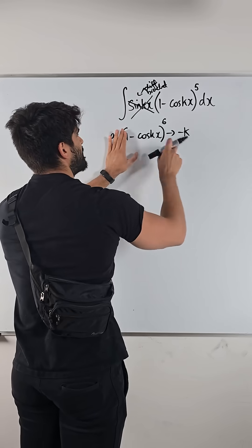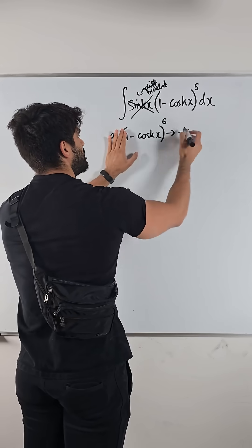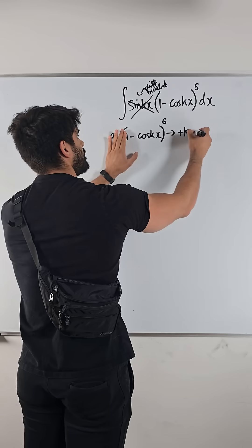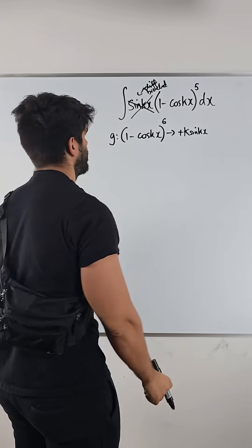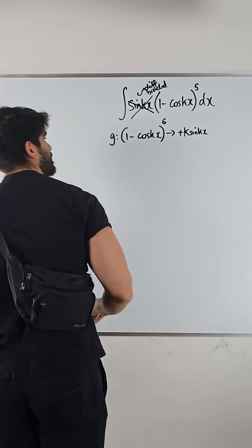Then cos differentiates to negative sine, negative sign meaning that sine is then going to become positive sine. Angle stays the same. All right, so that's the differential of what's inside the bracket.